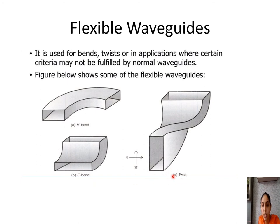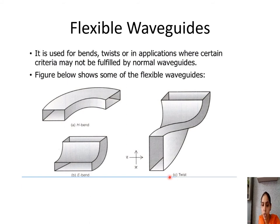A twist is usually a 45-degree or 90-degree twist. A 45-degree twist, as seen in isolators, is used for changing the plane of polarization — for example from horizontal to vertical or vice versa.